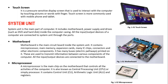Motherboard. Motherboard is the main circuit board inside the system unit. It contains microprocessor, main memory, expansion cards, many IC chips, connectors and other electronic components. It has many buses — electric pathways printed on it — and these are used to transmit information between various components of the computer.